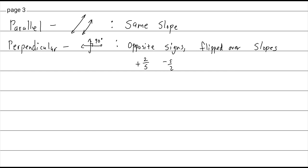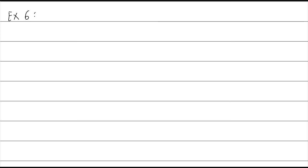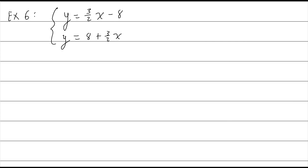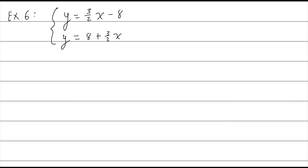Typically we want to identify whether two equations are parallel or perpendicular. Let's determine that for: y = 3/2 x - 8 and y = 8 + 3/2 x. I want to compare their slopes. Slope one is 3/2. Slope two is 3/2. Same slope, different y-intercept, so we'd say that these are parallel.